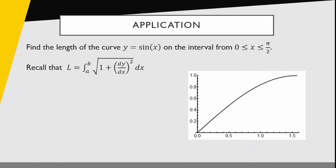This one says find the length of the curve y equals sine of x on the interval from 0 to pi over 2. So once again, we're just going to apply our formula. We know in this case that y equals sine of x. So therefore, y prime should equal cosine of x. So the length of this curve should be the integral from 0 to pi over 2, the square root of 1 plus cosine squared of x dx.